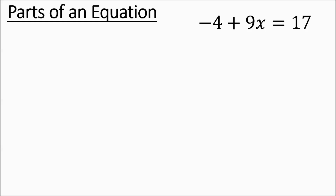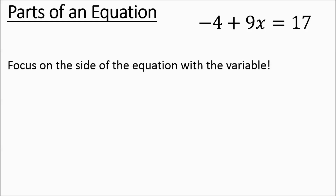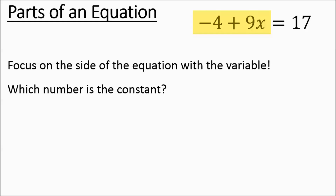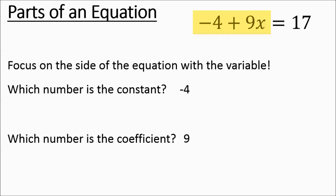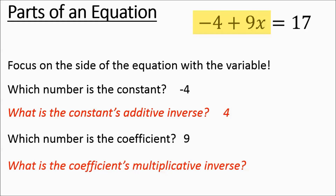We have another equation. We're going to tune into the left side of the equation sign. The constant is appearing first this time, so the constant is the negative 4. The coefficient is the number multiplying by the variable, and it's a positive 9. The additive inverse of negative 4 would be a positive 4, and the multiplicative inverse of 9 is going to be 1 ninth.